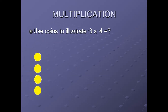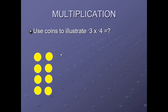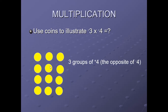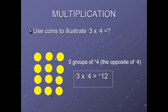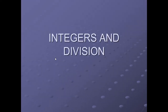Use coins to illustrate minus 3 × minus 4. Take 3 groups of the opposite of minus 4, that is 3 groups of plus 4. One group, another group, and a third group — 3 groups of plus 4 gives us 12. So minus 3 × minus 4 = 12.